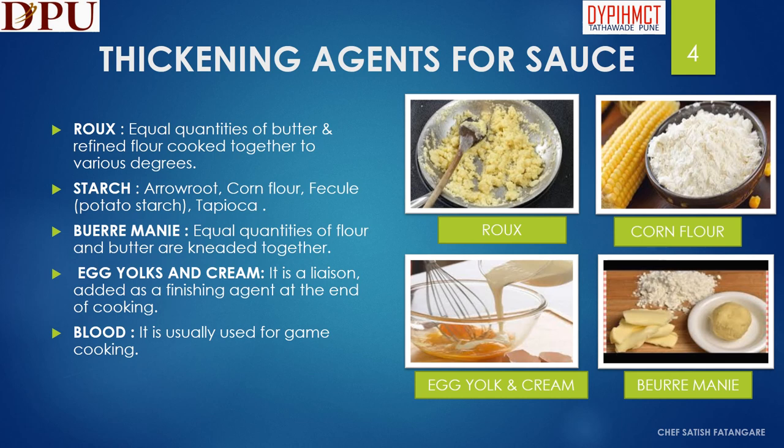In this slide we will learn about the thickening agents used while preparing the sauces. Roux: it is equal quantities of butter and refined flour cooked together to various degrees. Starch: arrowroot, corn flour, fécule or potato starch, tapioca. Beurre manié: it is equal quantities of flour and butter kneaded together. Egg yolks and cream: it is a liaison, added as a finishing agent at the end of cooking. Blood: it is usually used for game cooking.